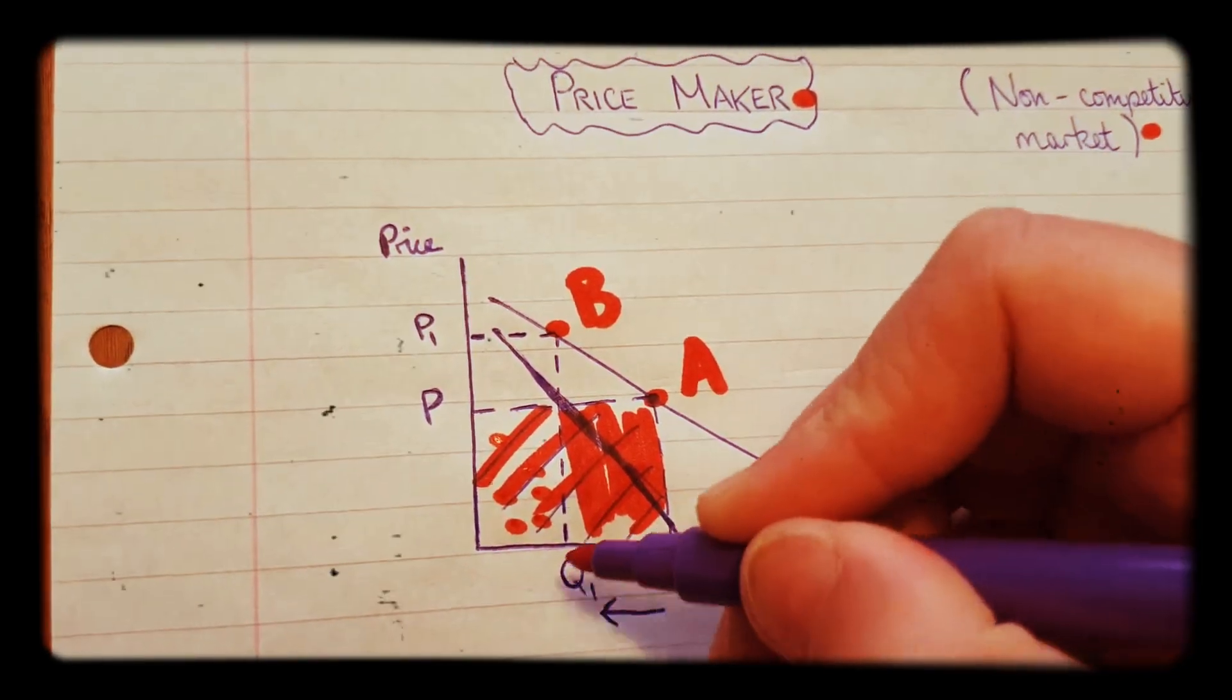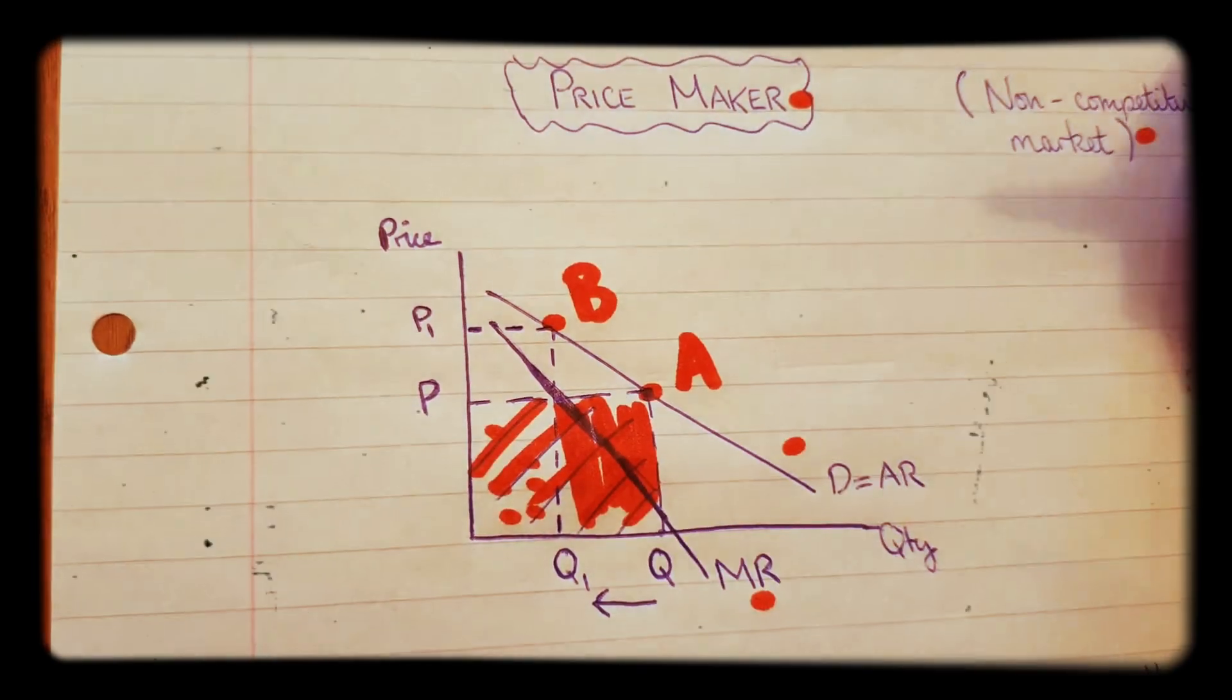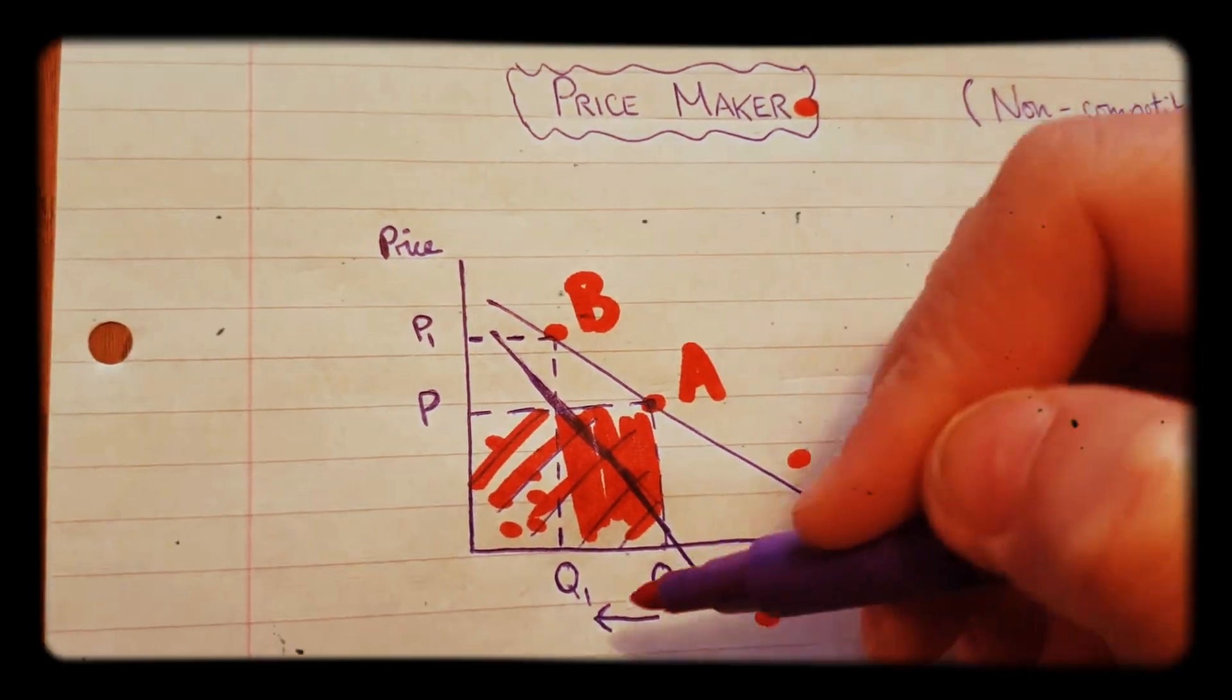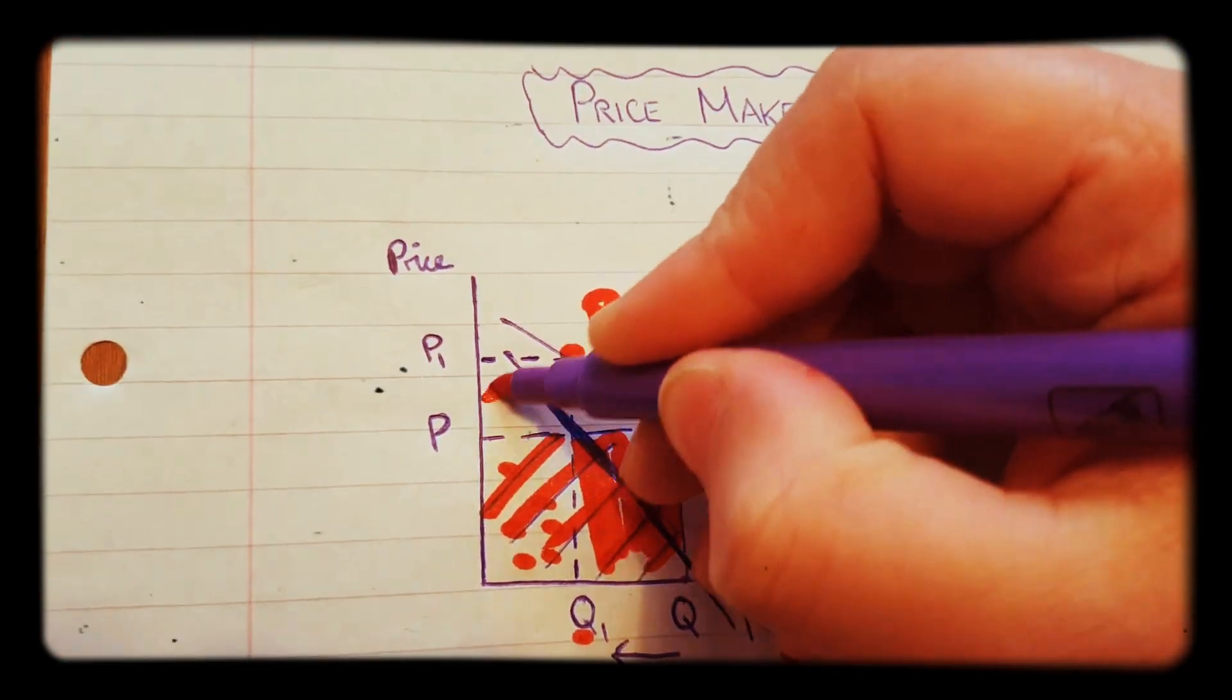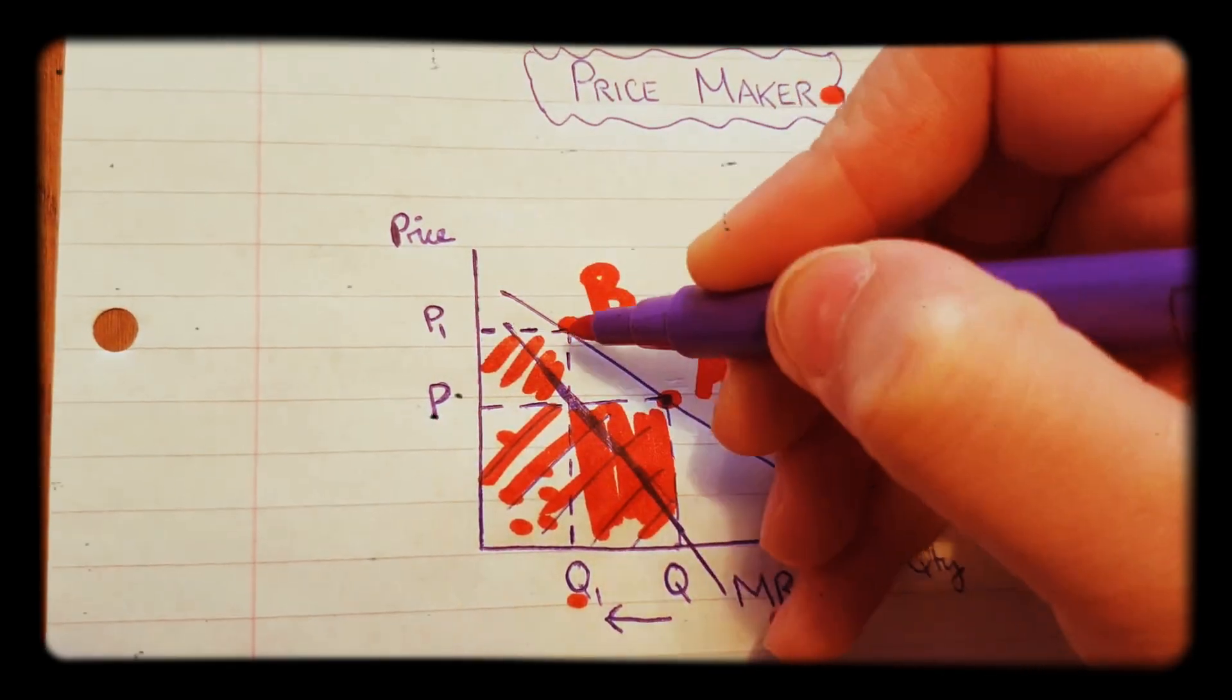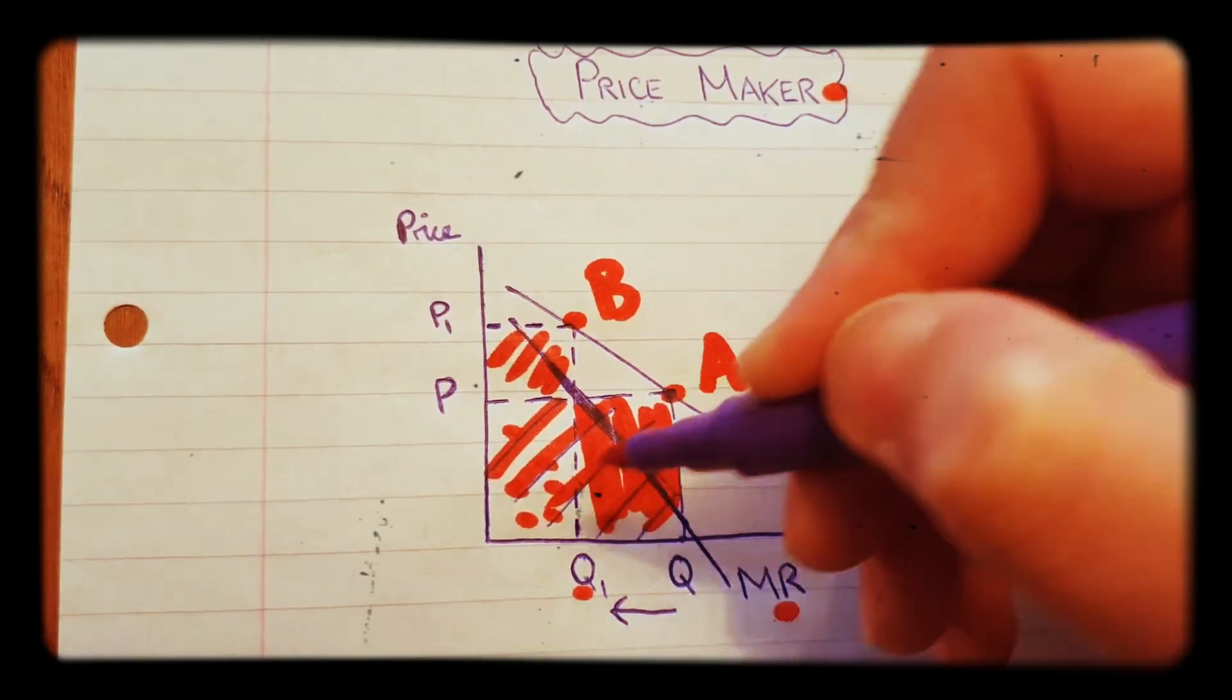However, at lower quantities this firm is a price maker. It can increase the price because it can still attract demand with an increased price at this point here. So with an increase in price the firm actually gains a bit of this. So the new total revenue goes from here to here, and it loses that but it gains that.